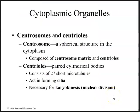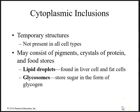Other organelles include centrosomes and centrioles. A centrosome is a spherical structure in the cytoplasm composed of the centrosome matrix and centrioles. Centrioles are paired cylindrical bodies consisting of 27 short microtubules. They act in forming cilia and are necessary for karyokinesis — nuclear division — which occurs during mitosis. We also have cytoplasmic inclusions, which are temporary structures not present in all cell types, and may consist of pigments, crystals of protein, and food stores such as lipid droplets found in liver and fat cells.